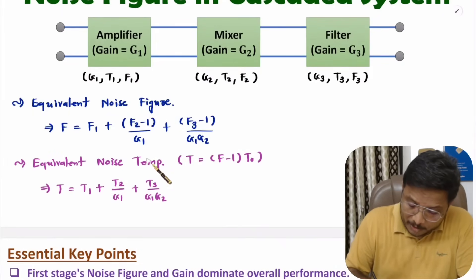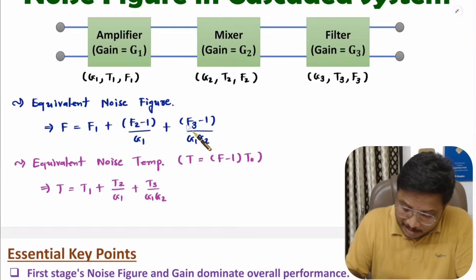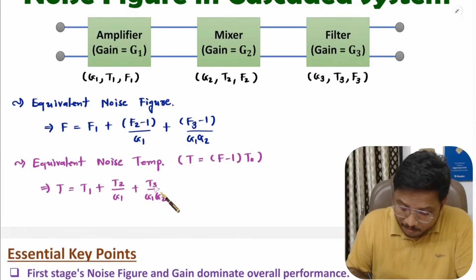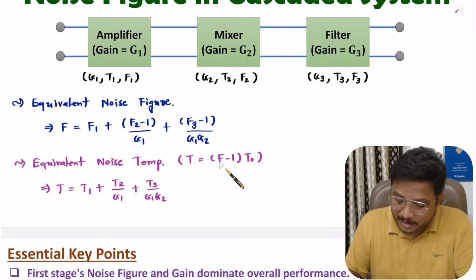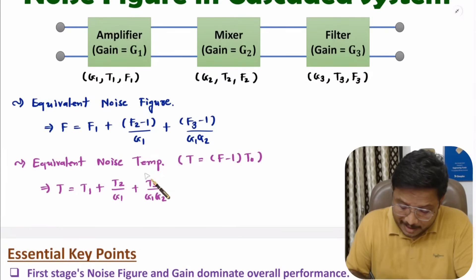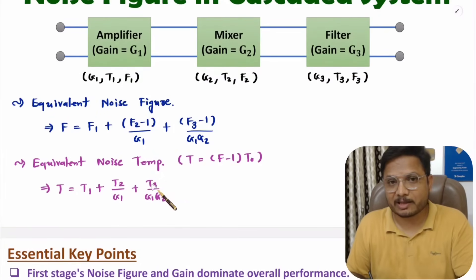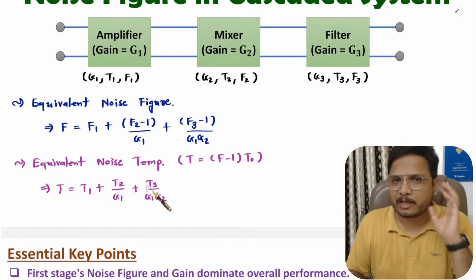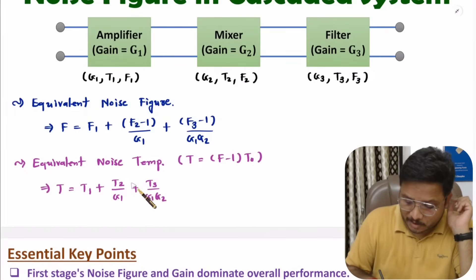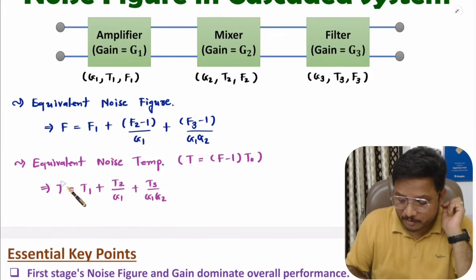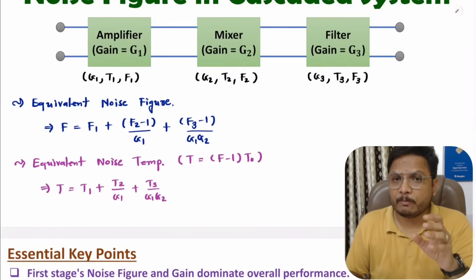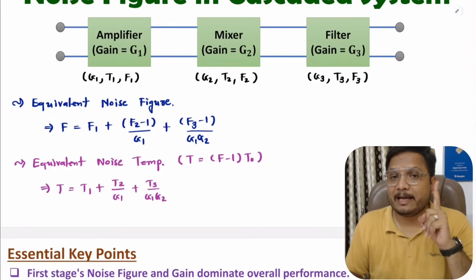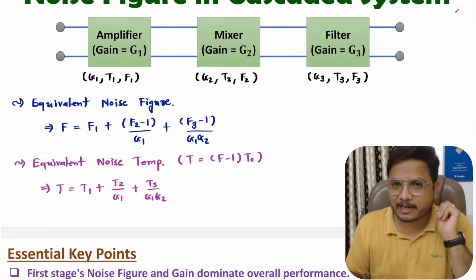Note that in the noise figure formula we have F2 minus 1 and F3 minus 1, but in the noise temperature formula we have T2 and T3 directly. The reason is that in the standard form of the equation we already have F minus 1 factored in, which is why the temperature terms appear without the minus 1. Otherwise everything is the same. These are the standard equations you need to remember for calculating equivalent noise temperature and equivalent noise figure for a cascaded system.